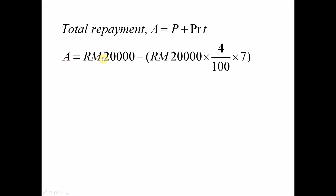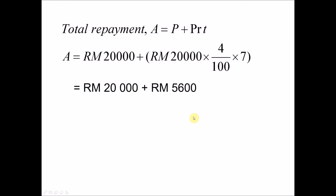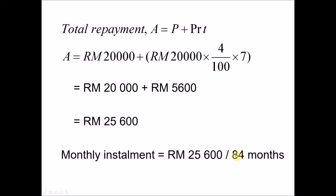Substituting the values: A equals twenty thousand plus twenty thousand times four over one hundred times seven years. The total amount ASRI has to repay the bank is twenty-five thousand six hundred ringgit. Dividing by seven years — eighty-four months — gives a monthly installment of approximately three hundred and four ringgit and seventy-seven cents.